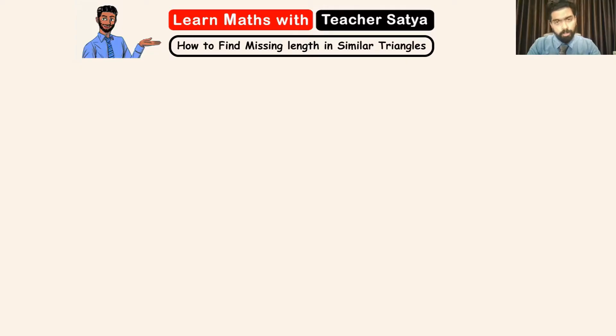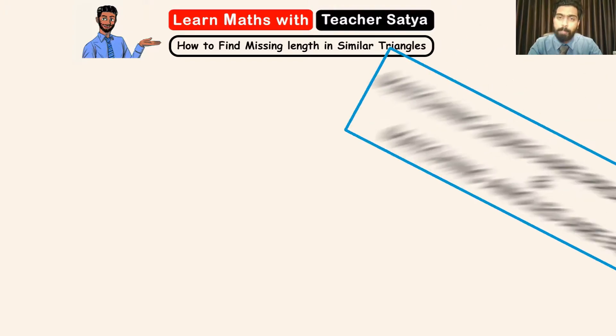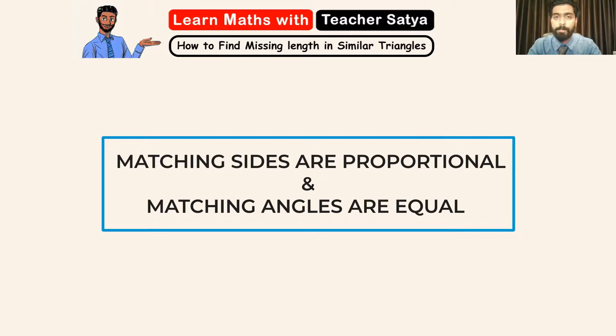Triangles will be similar to each other only when their matching sides are proportional and their matching angles are equal. So let's take this understanding and solve a question.